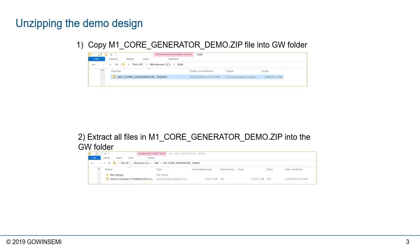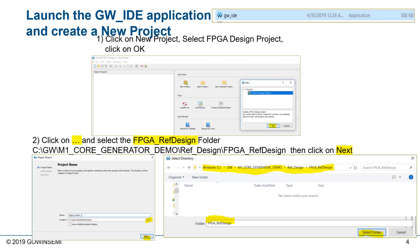Once you've downloaded the reference design, you can unzip it. In this case, we're placing them in the C Drive GW folder and extracting those design files into that folder. With the Gowen EDA tools installed and licensed, we're ready to launch and create a new project. We'll click on New Project and select the FPGA Design Project, then click OK.